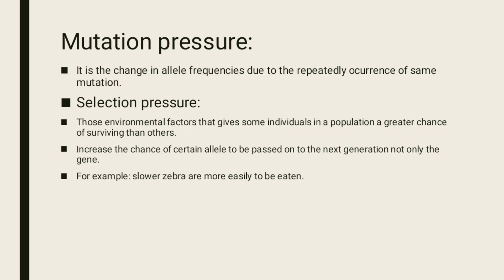Selection pressure refers to those environmental factors that give some individuals in a population a greater chance of surviving than others, increasing the chance of certain alleles being passed on to the next generation. For example, slow zebras are more easily eaten.